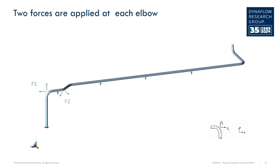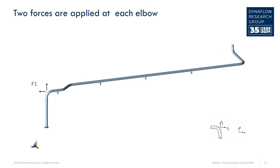The reason is that part of the issue with the slug is that it travels through the system. This creates a disbalance between opposite elbows. If a slug load is applied to all relative elbows at once, actual stress is induced in the pipe, but the disbalance is not modelled.